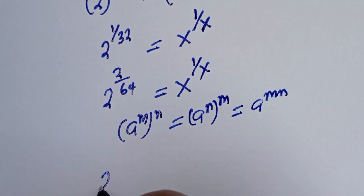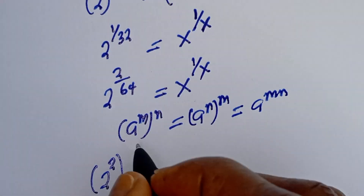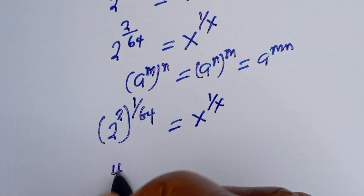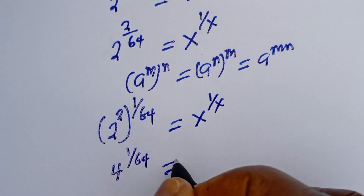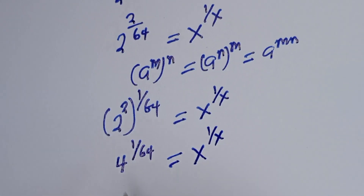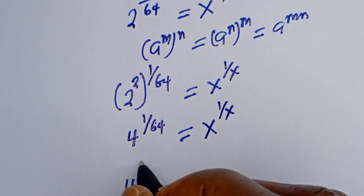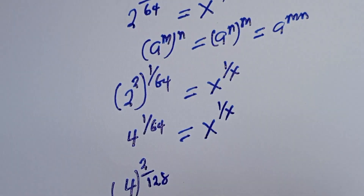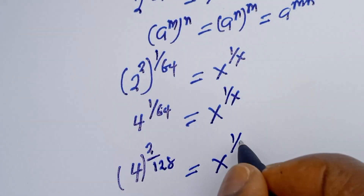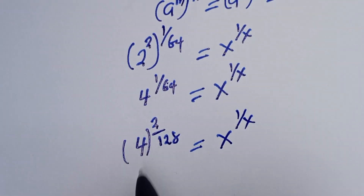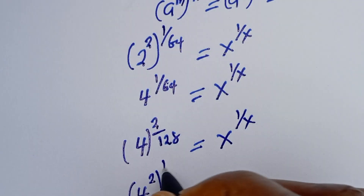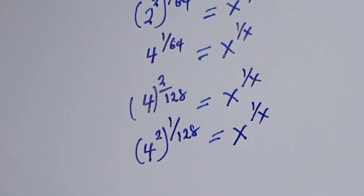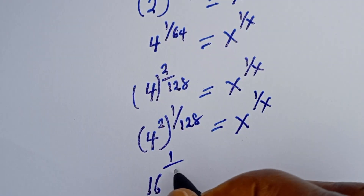So 2 to the power of 1 over 32 can be written as 2 squared to the power of 1 over 64, which equals 4 to the power of 1 over 64. This equals s to the power of 1 over s. Then 4 to the power of 1 over 64 can also be written as 4 to the power of 2 over 128, which is 4 squared to the power of 1 over 128 — that is 16 to the power of 1 over 128.